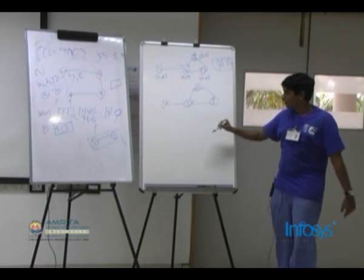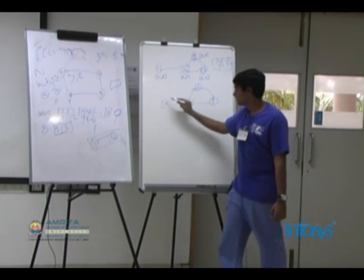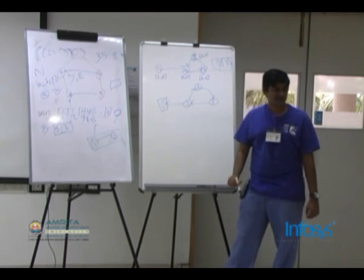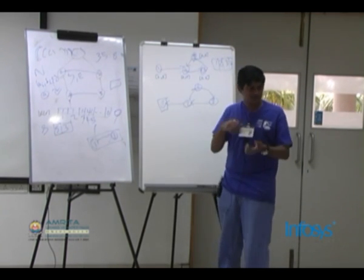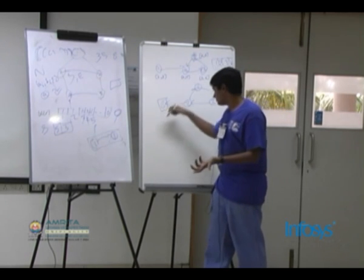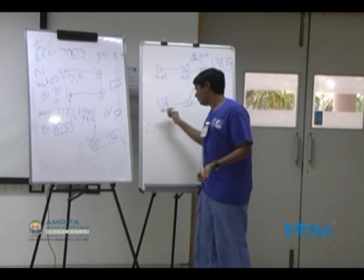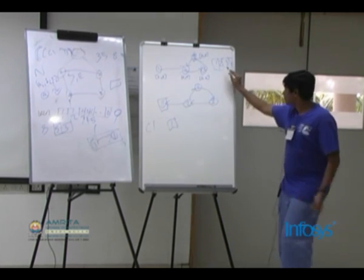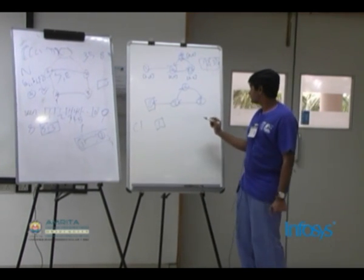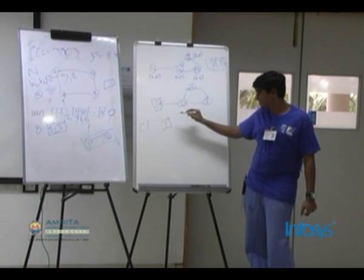One, call DFS of J dash. It will have only this vertex. So this means this is a separate strongly connected component. So component 1 will just have 1. Then call 2. So with 2, do a DFS.